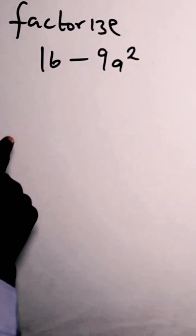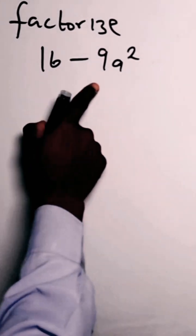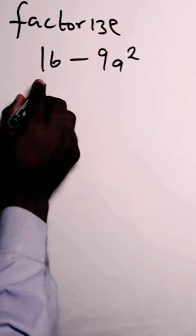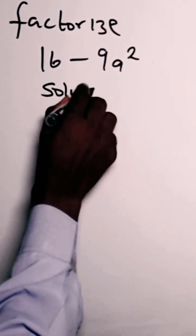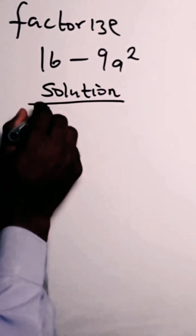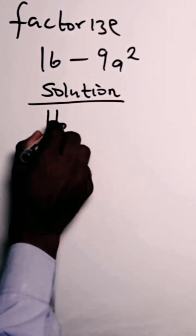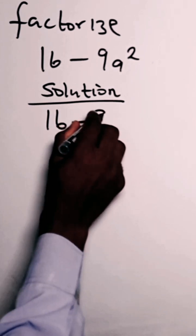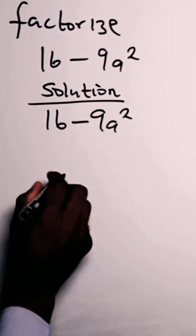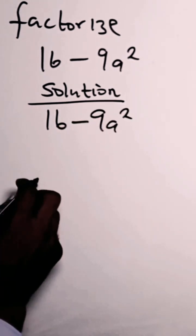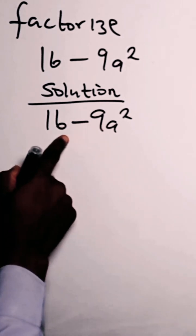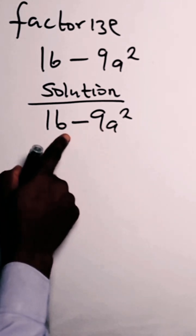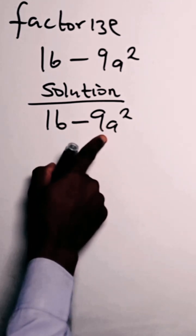The question says: factorize 16 minus 9a squared. How do we go about this solution? So we have 16 minus 9a squared. We don't have a common factor, so we have to use the difference of two squares to approach this.